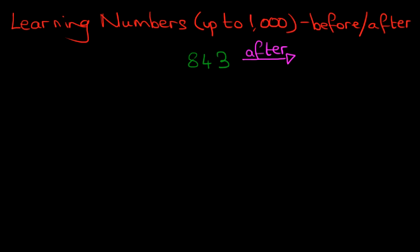So the number after 843 is, well, you're simply just counting forwards. And at this stage, you should know how to count in hundreds. Now the 8 doesn't change. It's still 800. The 43 becomes 44. So the number after 843 is 844.